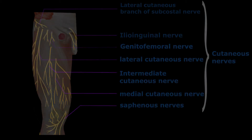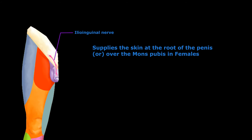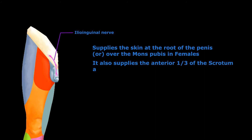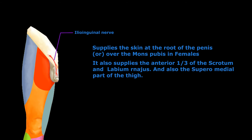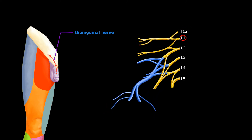The first nerve is the ilio-inguinal nerve. This nerve supplies the skin at the root of the penis, or over the mons pubis in females. It also supplies the anterior one-third of the scrotum and labia majus, and also the supramedial part of the thigh. The root value of the ilio-inguinal nerve is L1, as it emerges from the L1 segment of the lumbar plexus — the same level that gives off the ilio-hypogastric nerve.